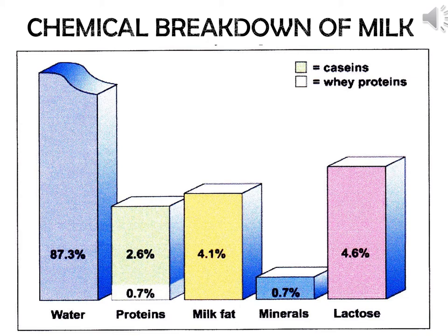Breaking down the chemical composition of milk, we can see that milk falls into five different classifications. The majority of milk — about 85 to 90 percent — is just water. There's a little bit of protein, which comes in two forms: casein and whey. There's a significant amount of milk fat, some minerals such as calcium, magnesium, and phosphorus, and a carbohydrate source which is lactose. Note that this is the chemical composition for whole milk only; two percent, one percent, and skim milk are going to have lower levels of fat.